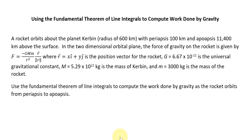In the two-dimensional orbital plane, the force of gravity on the rocket is given by f equal minus G big M little m divided by r squared times the vector r over the magnitude of r. Where the vector r is a position vector given in terms of x and y components for the rocket. G is the universal gravitational constant, 6.67 times 10 to the minus 11. Big M is 5.29 times 10 to the 22 kilograms, the mass of the planet Carbon. And little m, that's 3,000 kilograms, the mass of the rocket.